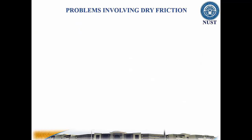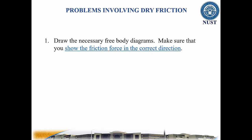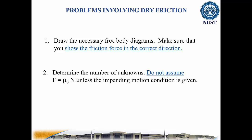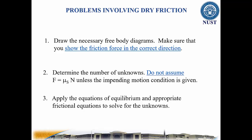Here is the problem-solving technique involving dry friction. Draw the necessary free body diagrams. Make sure that you show the friction force in the correct direction — it always opposes the motion or impending motion. Determine the number of unknowns. Do not assume F equals mu times N unless the impending motion condition is given. Apply the equations of equilibrium and appropriate frictional equations to solve for the unknowns.